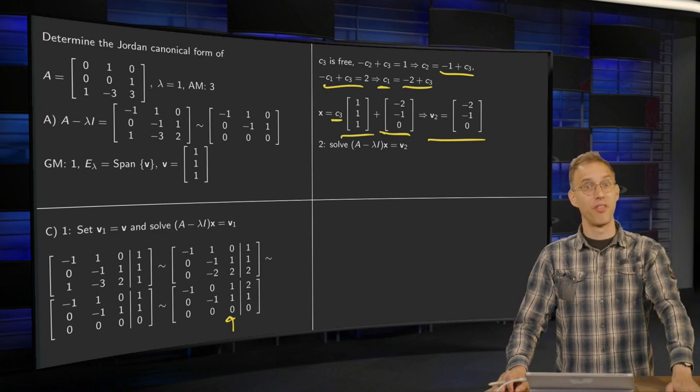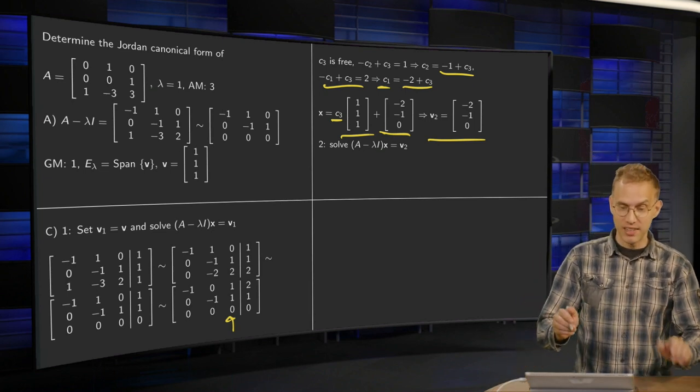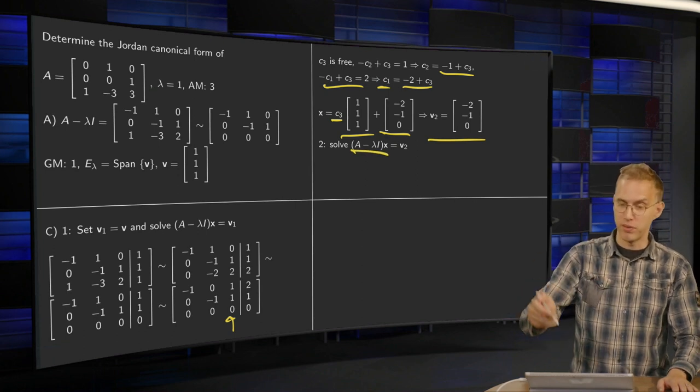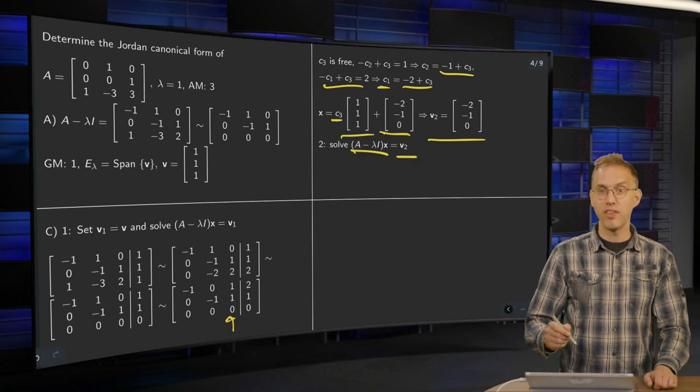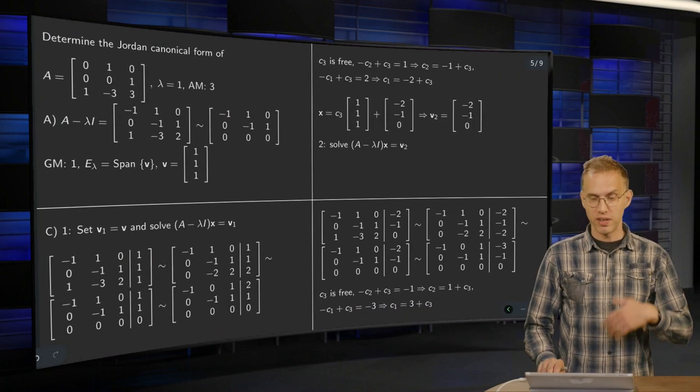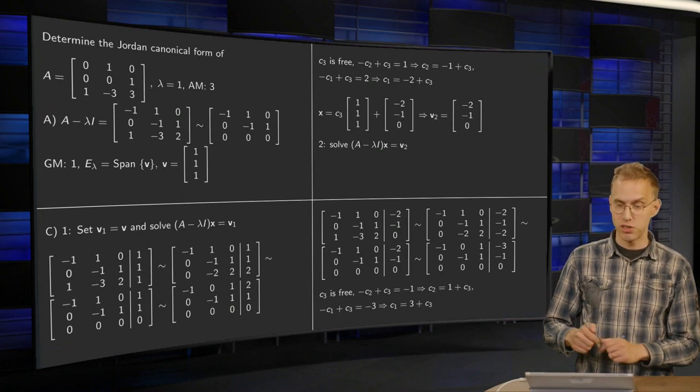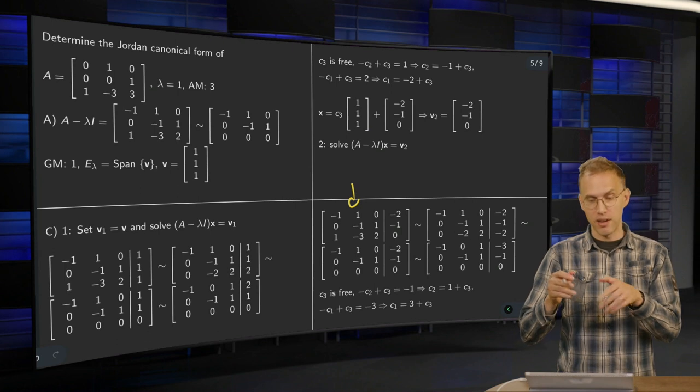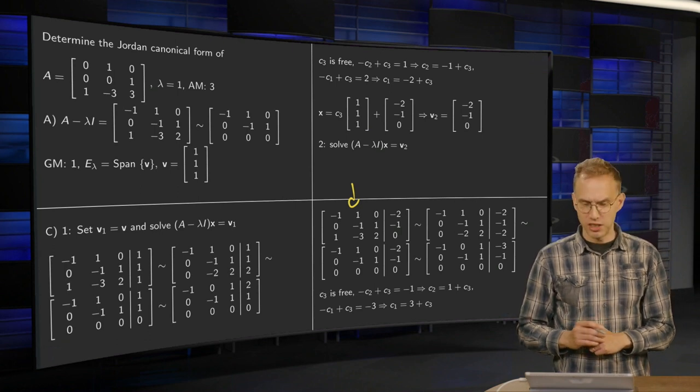Going on to the third one, we do exactly the same solve A minus lambda I times X, but now instead of V1, we put V2. So the only thing which is going to change is that our right-hand side here becomes slightly different. So we can do the same row reduction steps. This part will remain the same, and only the right-hand side is changing a bit.